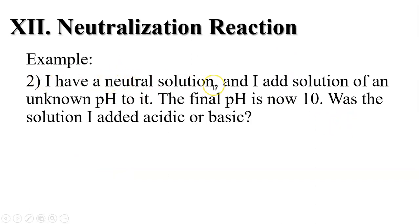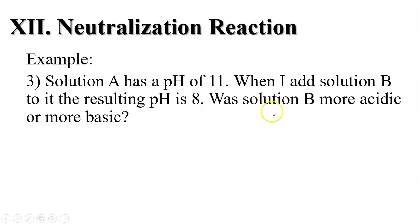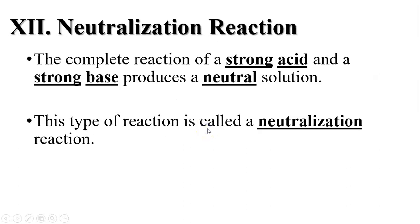Next example: if I have a neutral solution with a pH of 7 and I add a solution of unknown pH and the final pH becomes 10, that unknown solution was definitely a base. In another example, if the pH went down from 11 to 8 after adding solution B, then solution B had to be more acidic — it was an acid.